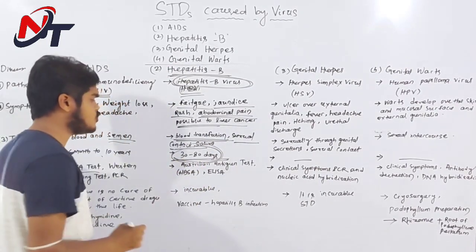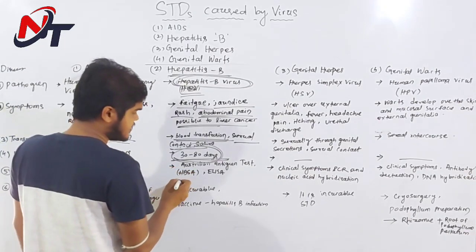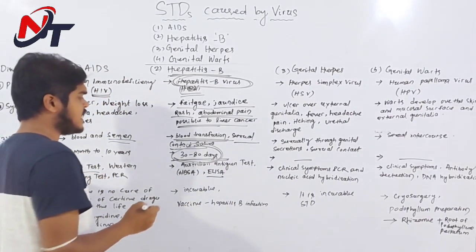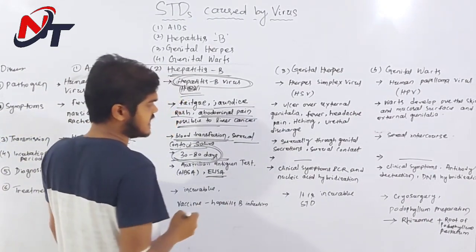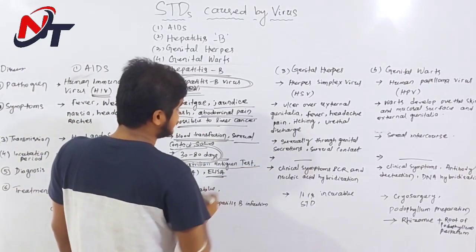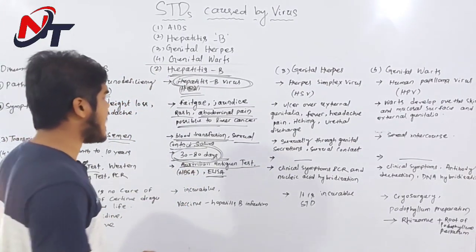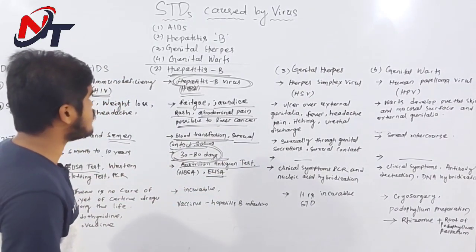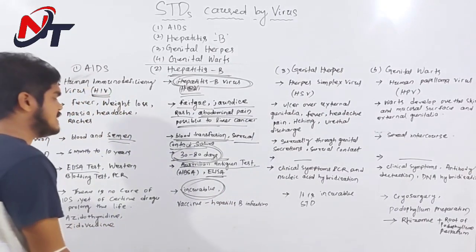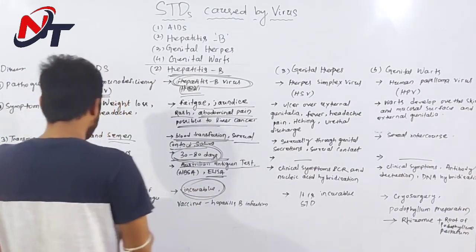The incubation period of hepatitis B is 30 to 80 days. For diagnosis, we use serological tests and check markers such as surface antigens and alpha drivers. There is also a Speed B test used. There is no cure for hepatitis B either.